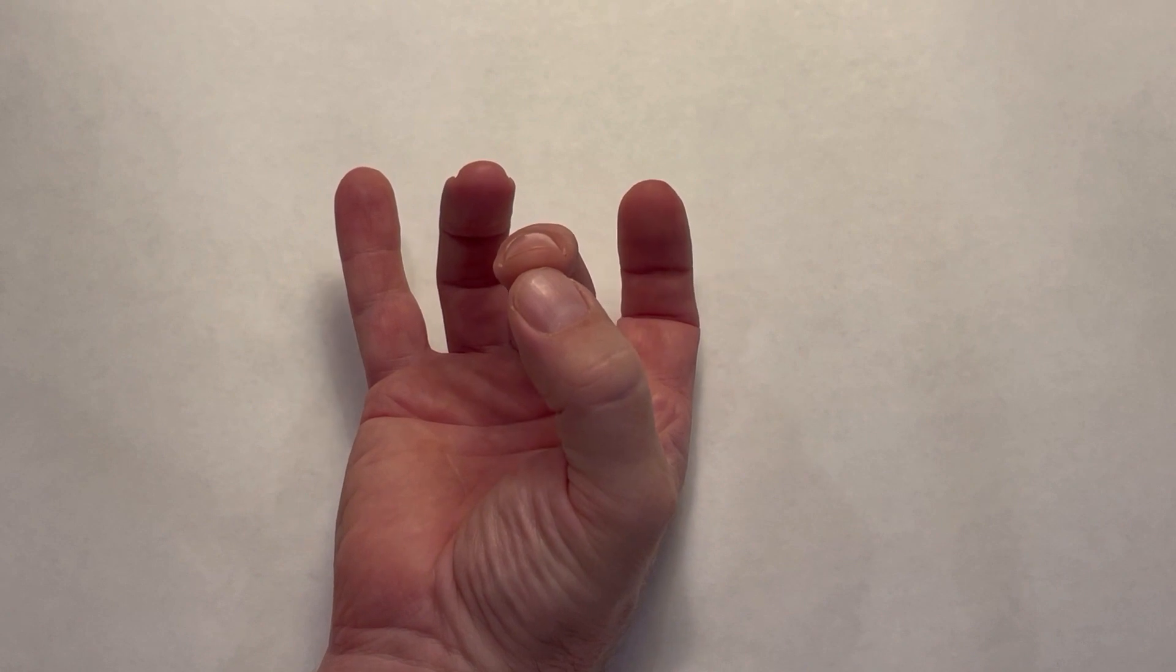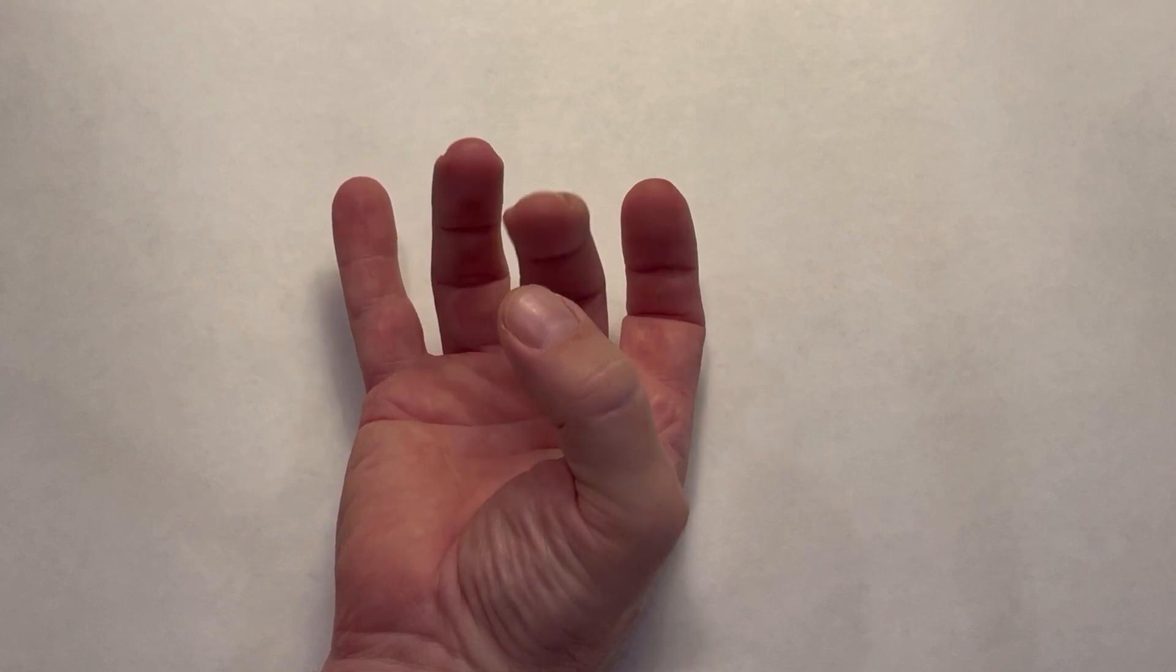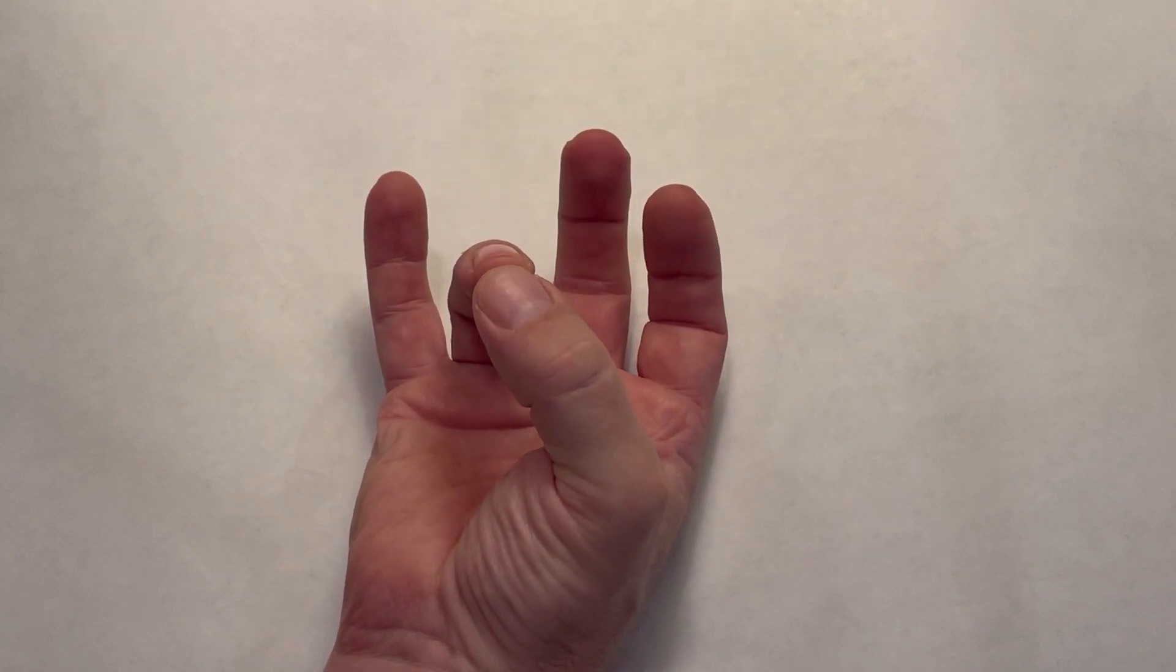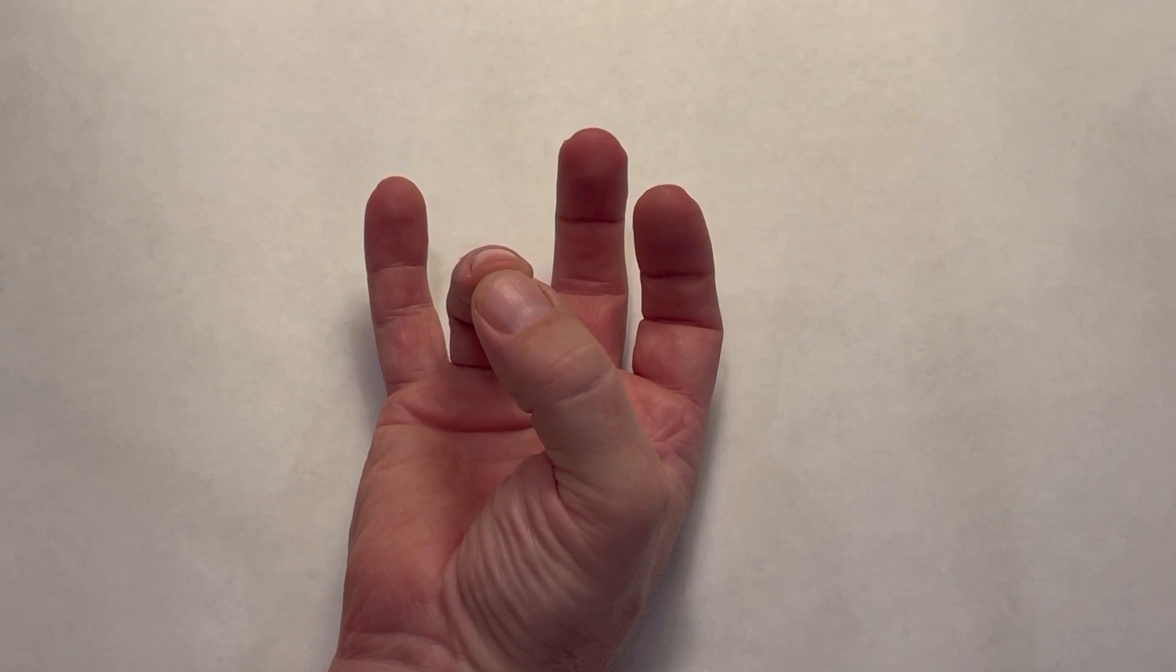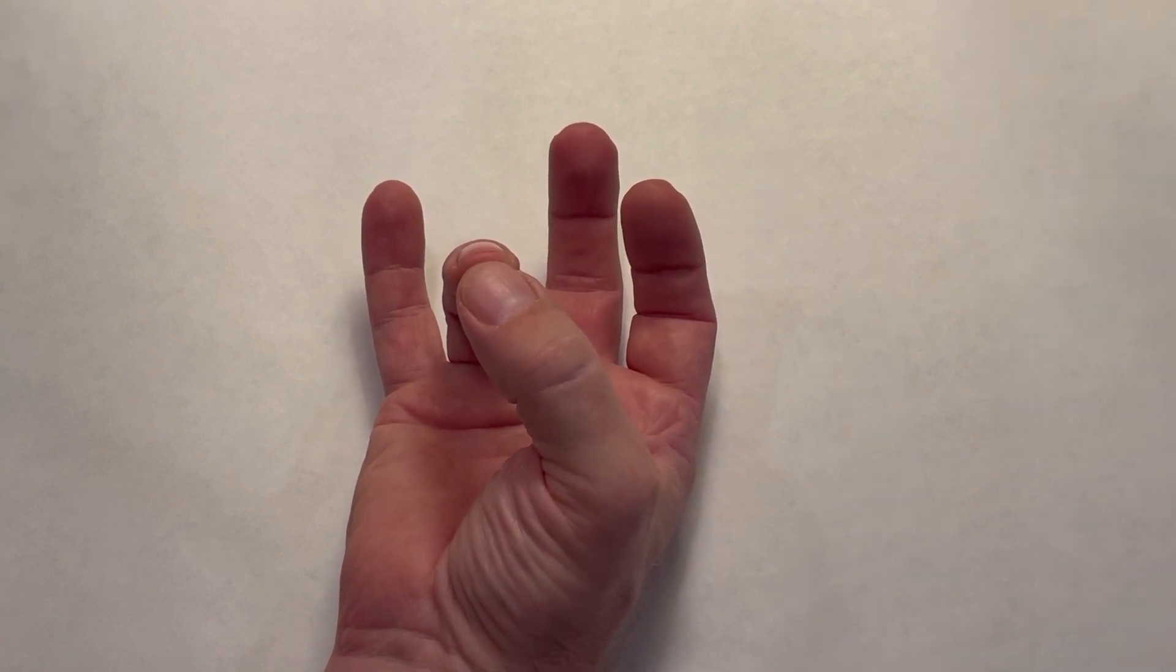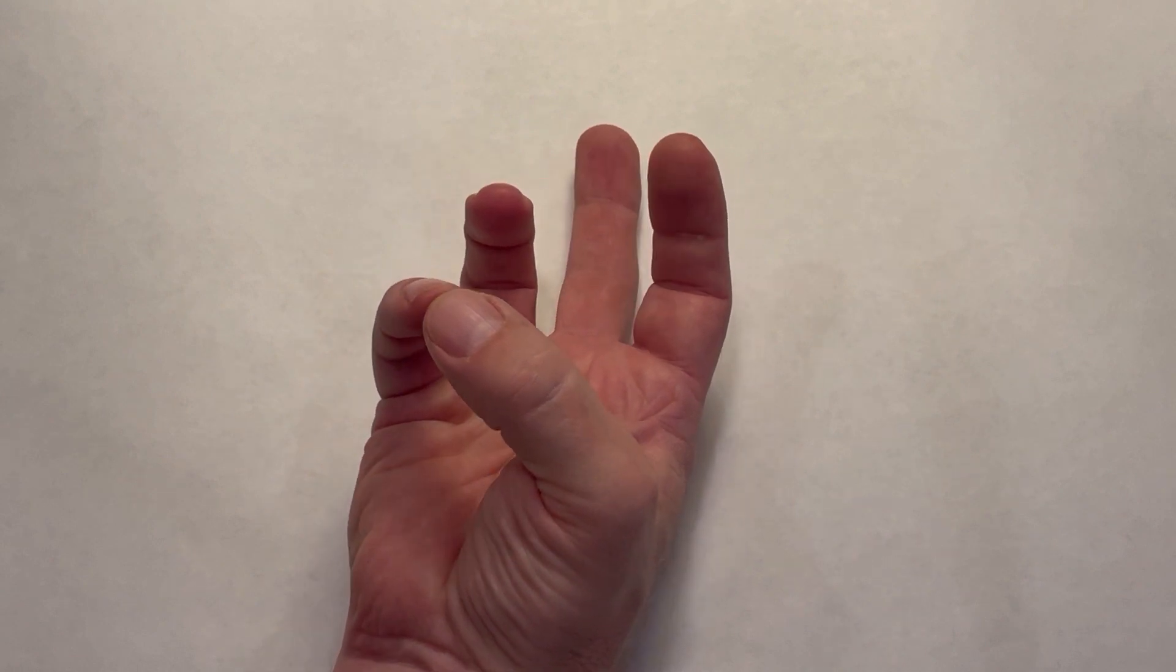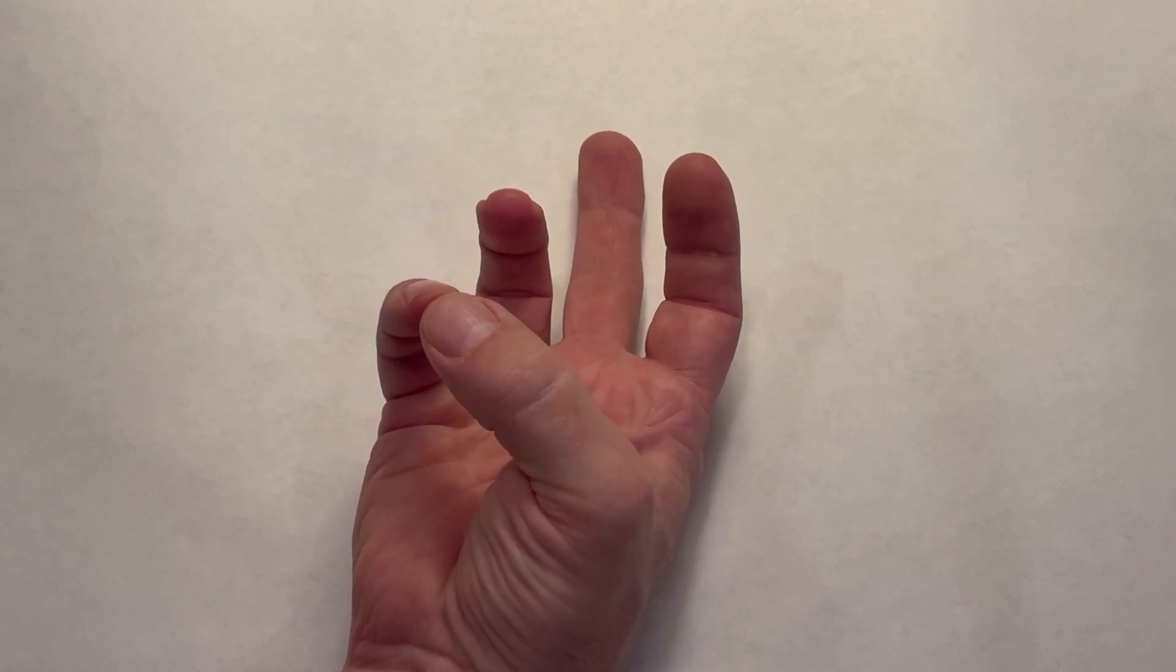Stage 4 is thumb to middle finger. Stage 5 is thumb to ring finger. Stage 6 is thumb pad to small finger pad.